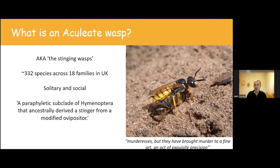This group — the stinging wasps — includes solitary species. Most of them are solitary, but it also has the full range of different degrees of sociality, all the way up to eusocial, such as Vespula vulgaris, the common wasp, which is fully eusocial with overlapping generations, cooperative brood care, and sterile worker castes.